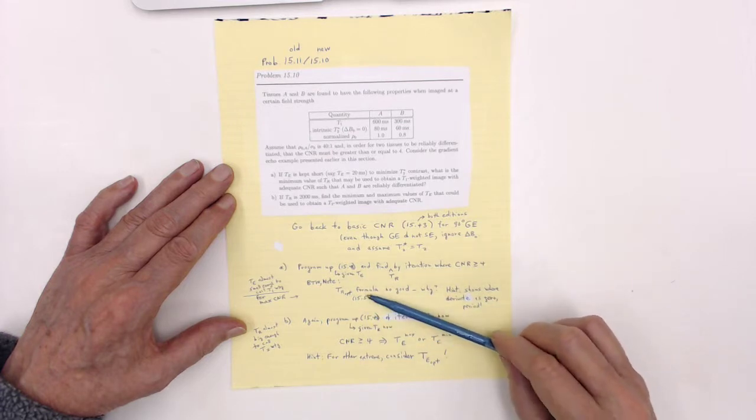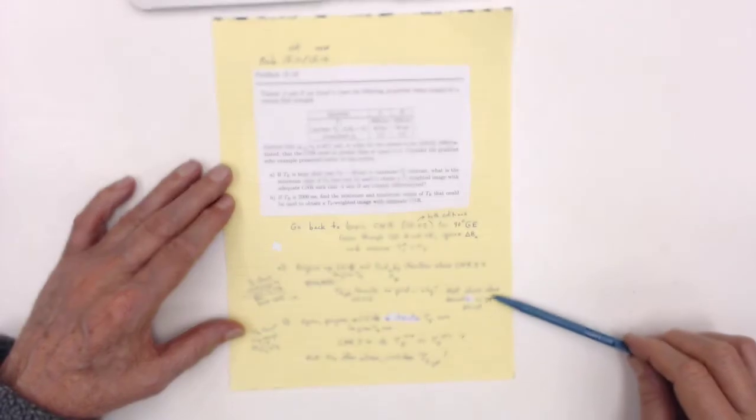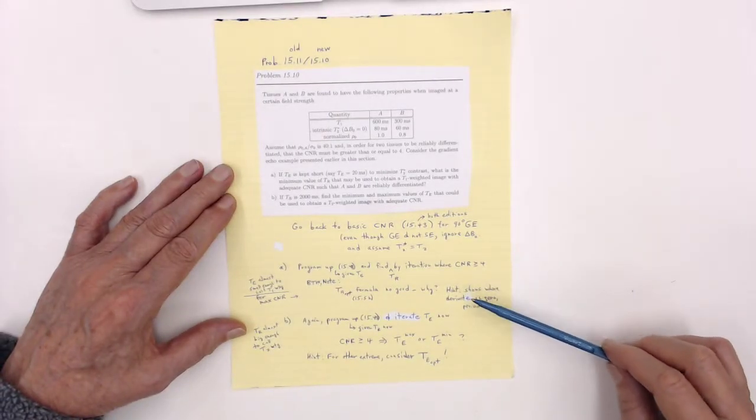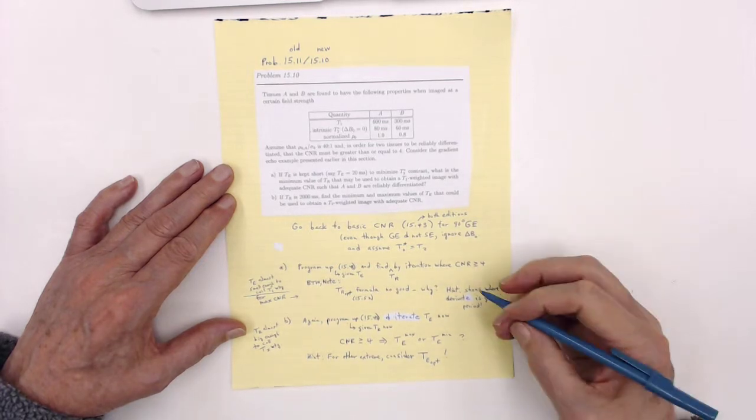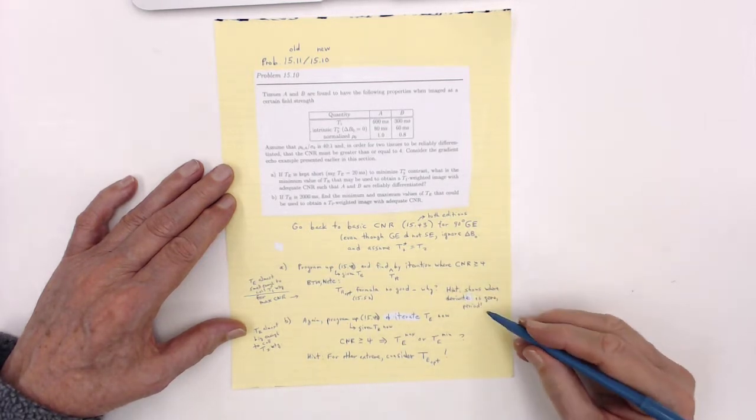That calculation, that derivation came from setting a derivative equal to zero and trying to find where the maximum CNR is. Well you know from calculus that that's not enough. Your hint shows where the derivative is zero. Derivative is zero, period.